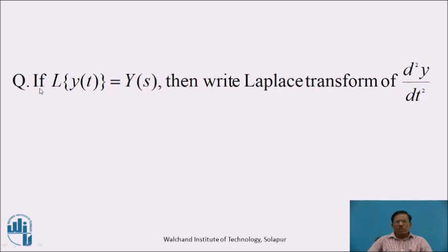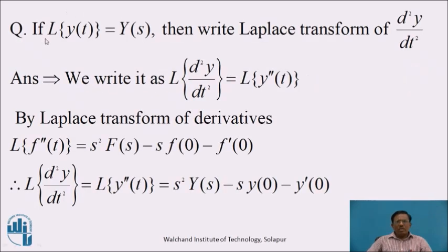Now, let us pause the video for a while and write the answer to the question. Question: if Laplace transform of y(t) equals Y(s), then write the Laplace transform of d²y/dt². The Laplace transform of d²y/dt² can be written as L{y''(t)}. By the Laplace transform of derivatives, L{f''(t)} = s²·F(s) − s·f(0) − f'(0). Similarly, here L{d²y/dt²} = L{y''(t)} = s²·Y(s) − s·y(0) − y'(0). This is the required answer.